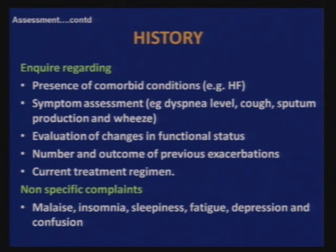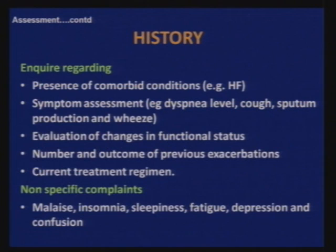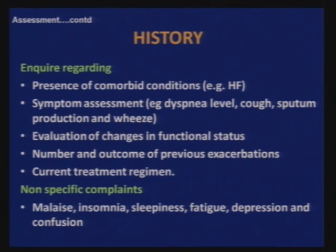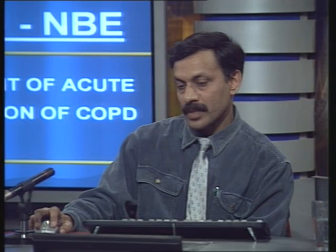When assessing these patients, history should include: presence of comorbid conditions like heart failure; symptom assessment — level of dyspnea, cough, sputum production and purulence; nonspecific complaints like malaise, insomnia, sleepiness, fatigue, depression, and confusion — for example, whether a previously functional patient has become home-bound or bed-bound. Also important: number and outcomes of previous exacerbations and what the current treatment was. These nonspecific complaints may be related to decreased oxygen levels or increased carbon dioxide levels.